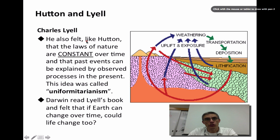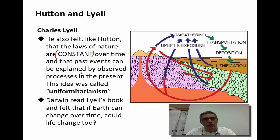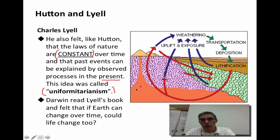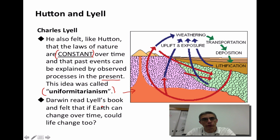Another individual, Charles Lyell, had very similar beliefs to Hutton. He felt that the laws of nature are constant over time and that anything that happened in the past can be explained by observing processes that still occur in the present — a concept called uniformitarianism. On the right-hand side, you can see a simplistic example of the rock cycle, representing processes that produce the geologic features we notice today, occurring over millions and millions of years. Darwin had actually read Lyell's book, and he felt that if the earth can change over a long period of time, then life could change over a long period of time as well.